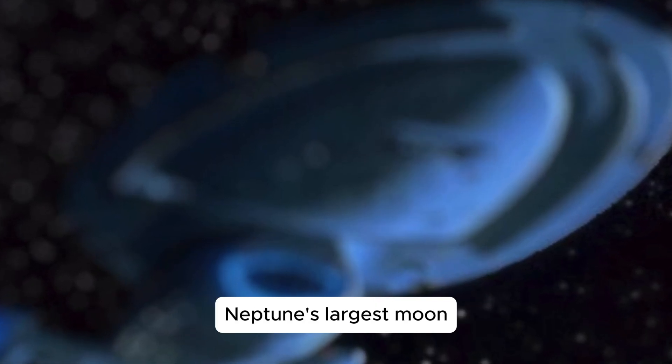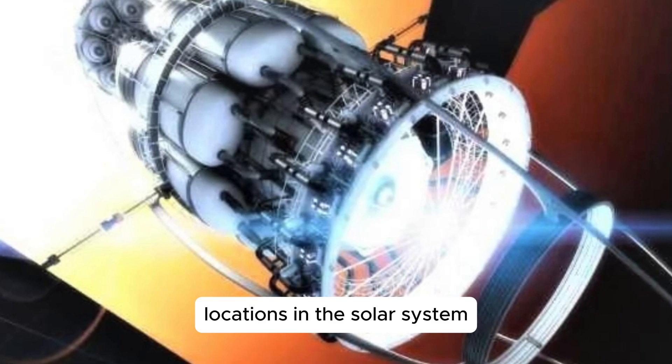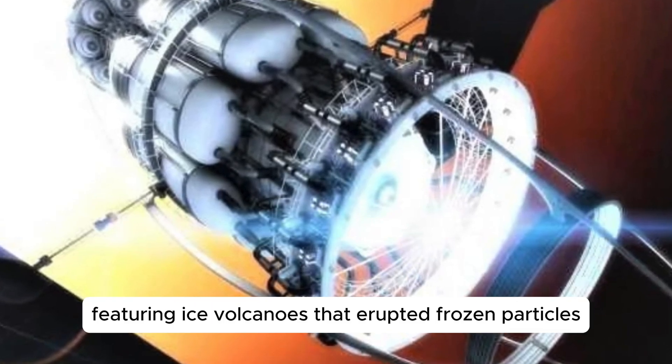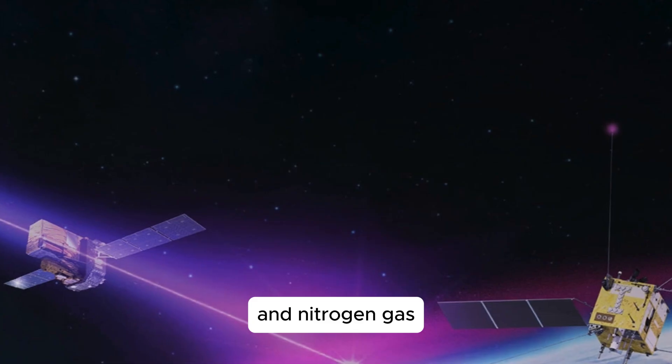Triton, Neptune's largest moon, was found to be one of the coldest locations in the solar system, featuring ice volcanoes that erupted frozen particles and nitrogen gas.